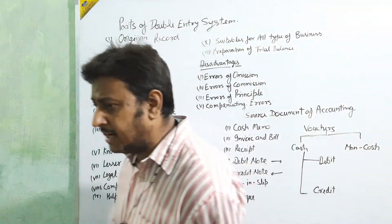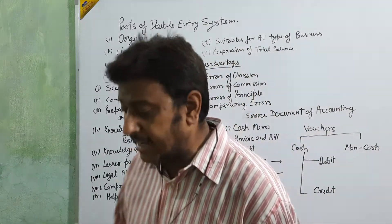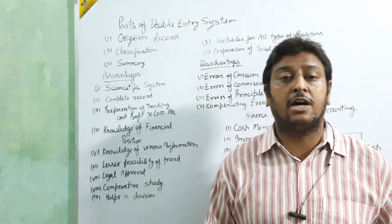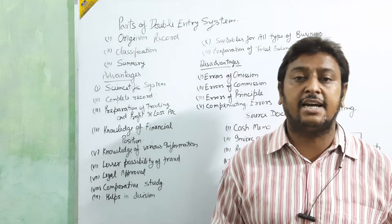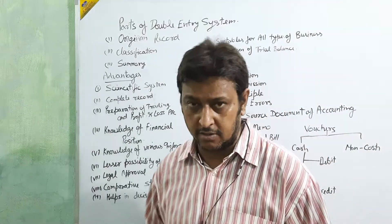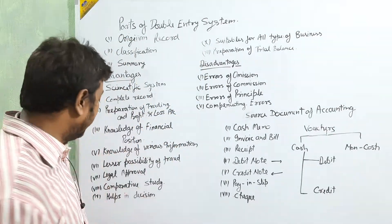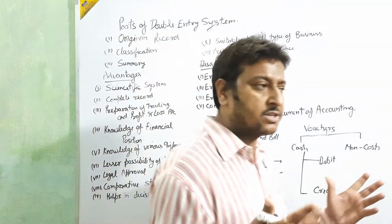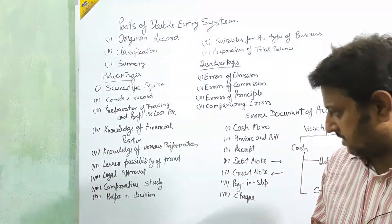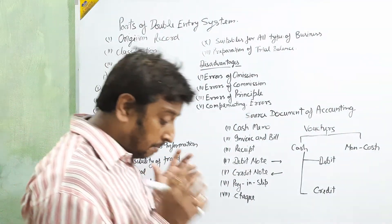Next is comparative study. In the double entry system, all statements are made in a systematic way, so we can easily compare all details year by year or business to business. We can make comparative statements and common size statements to compare one year with another or one business with another.